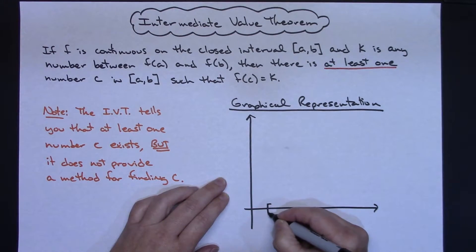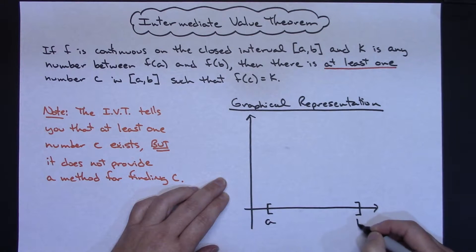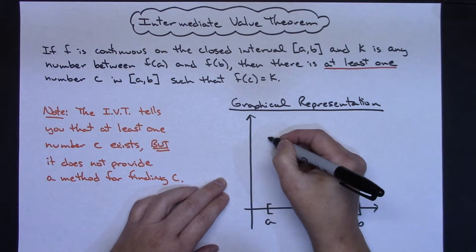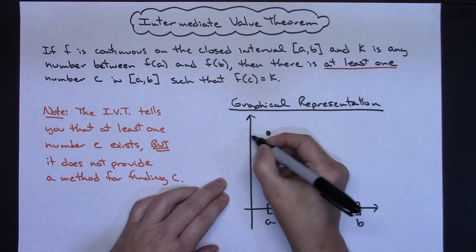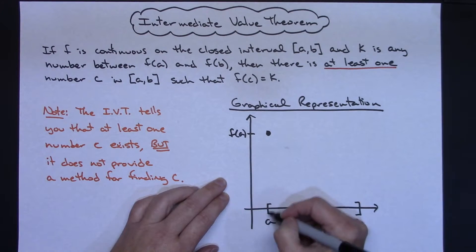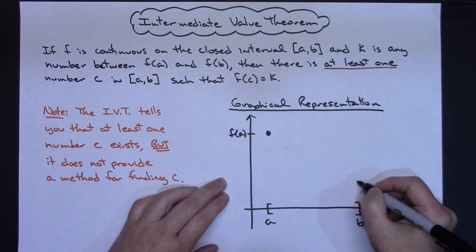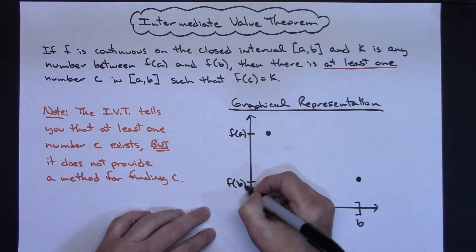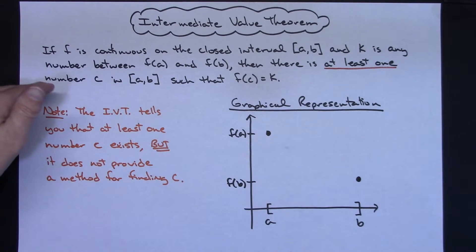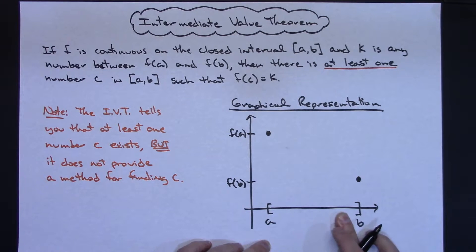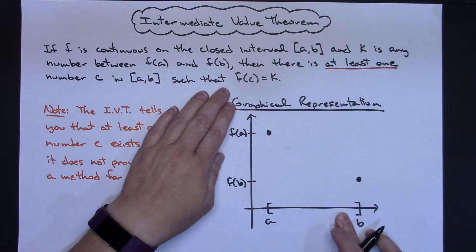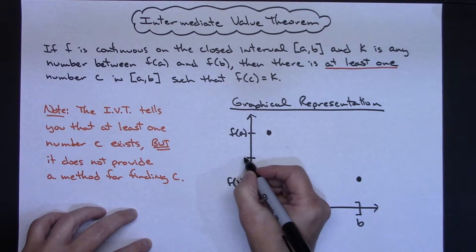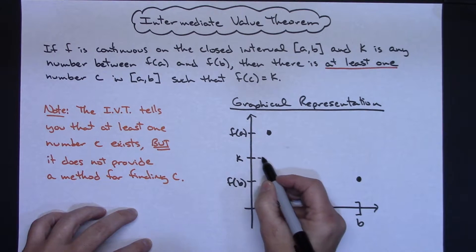Let's suppose we're on the closed interval from A to B. I've got an F of A and an F of B — let's say F of A is up here and F of B is right about there. Now the theorem says there's at least one value C down here on the x-axis, in between A and B, such that F of C equals K. K has to fall in between F of A and F of B, so I'll draw a little line there.